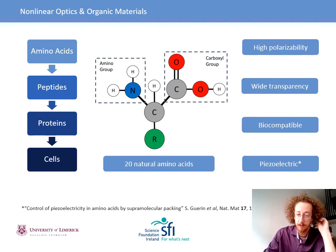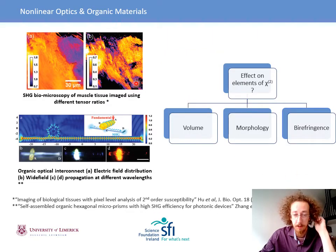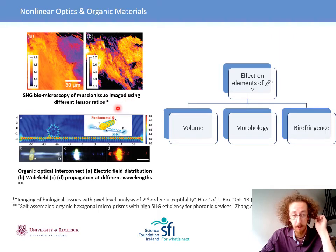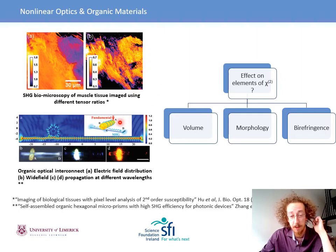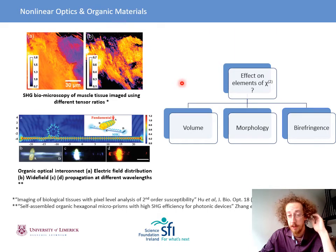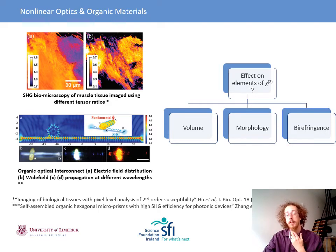In what scenarios would it be useful to study the effect of morphology? An example is biomicroscopy — for instance, SHG imaging of muscle tissue, looking at contributions of two different tensor components. Or in a photonics environment, an example of an organic optical interconnect where the fundamental SHG is generated in a hexagonal prism before being propagated along a waveguide for non-linear multiplex signal transmission. What's often left out, but could be useful for tissue diagnostics or optimising device design, is the effect of morphology on which tensor components you're probing. We split this into three segments: volume, morphology, birefringence, the cumulative effect, and recovering the chi-2 tensor values.